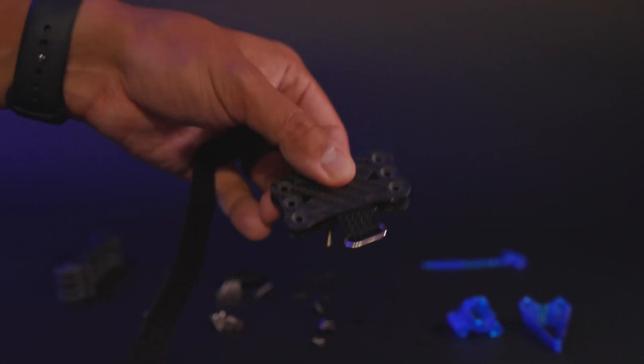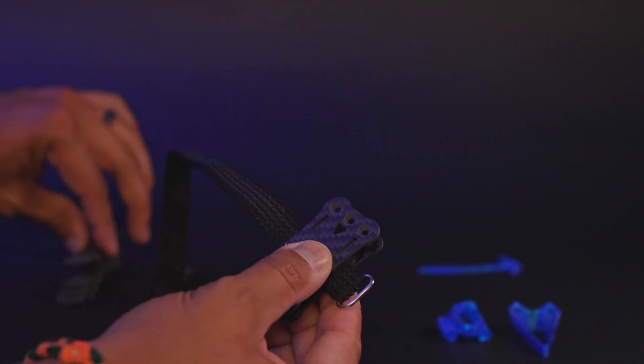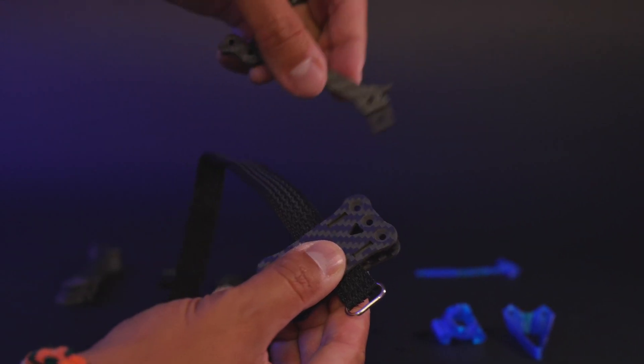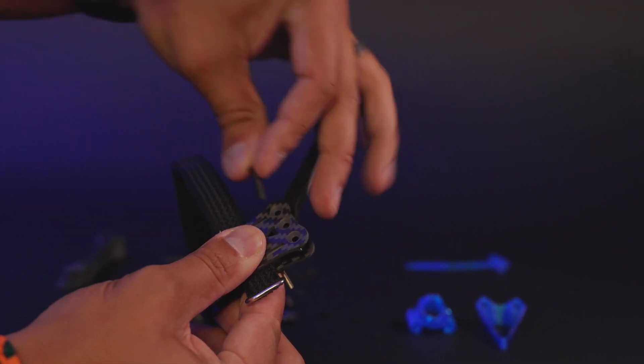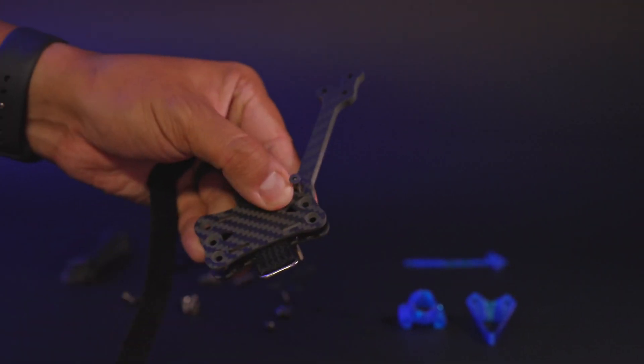And now you can proceed to installing all four of your arms. You're going to use your 16 millimeter countersunk screws and put those into the arms, and then the middle holes are going to be your compression screws, which are your shorter countersunk screws.